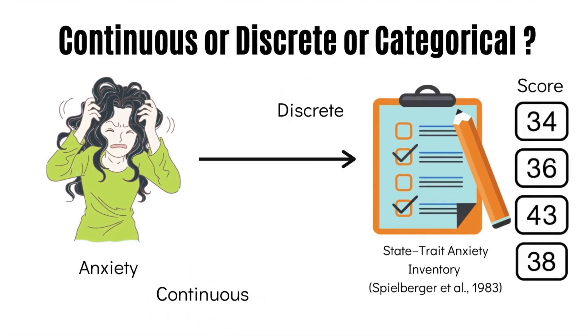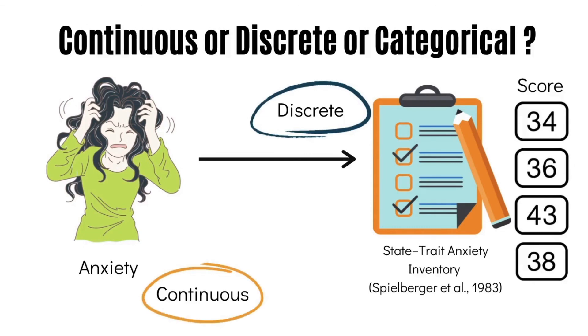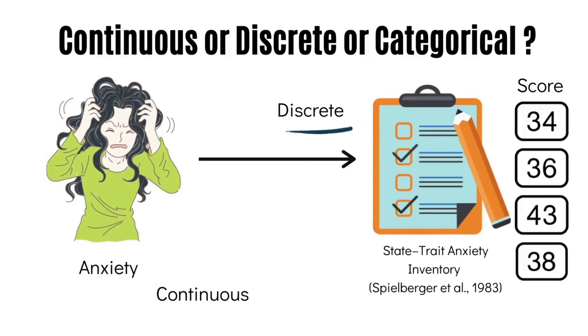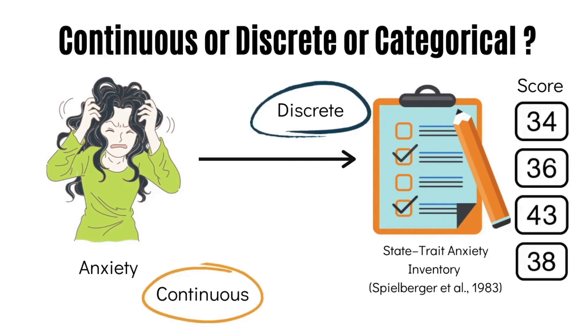This highlights that the way we measure our data essentially decides the characteristic of the variable of interest — which in this case was discrete in nature.